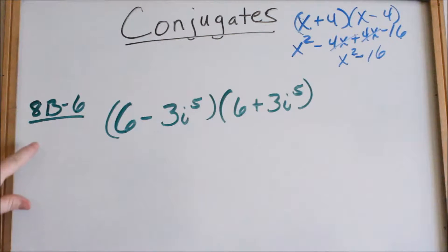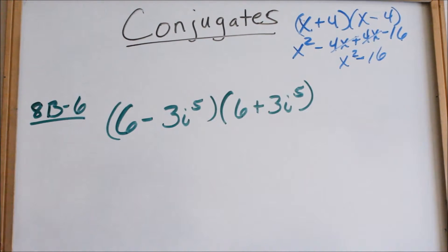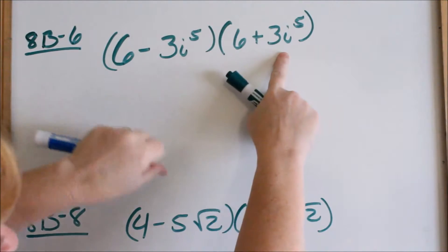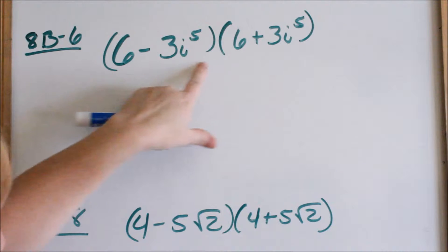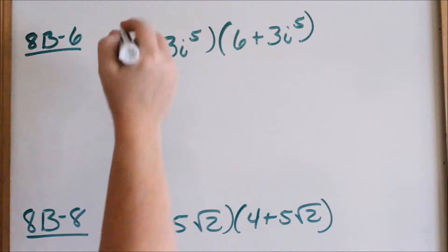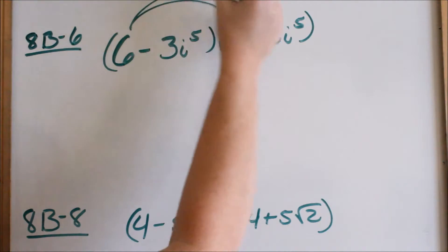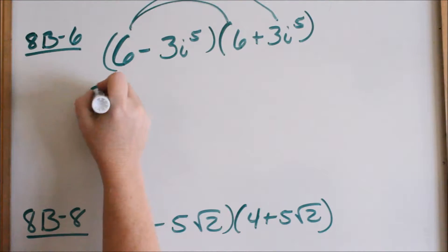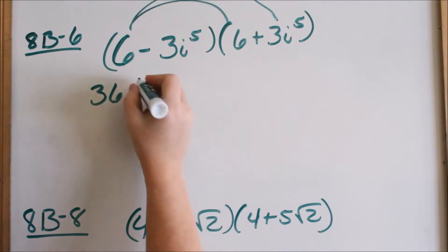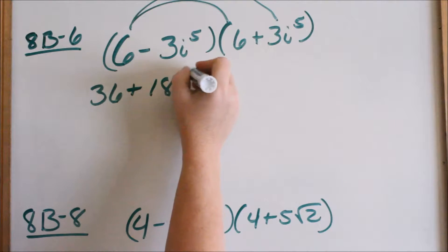Now let's look at 8b6. These two things are conjugates of each other, and they want you to multiply this out, which means you're going to FOIL it. 6 times 6 is 36. 6 times a positive 3i to the 5th is 18i to the 5th.